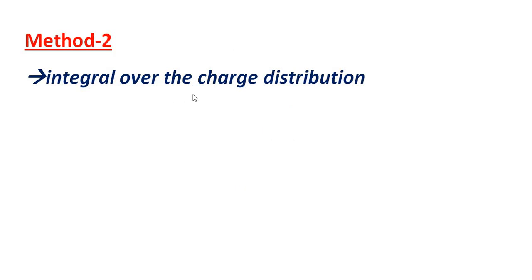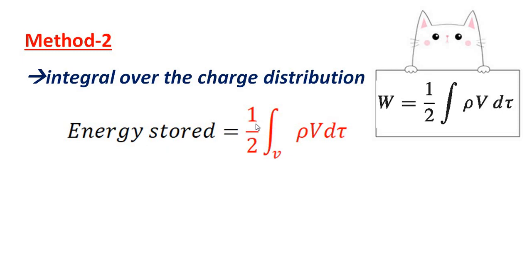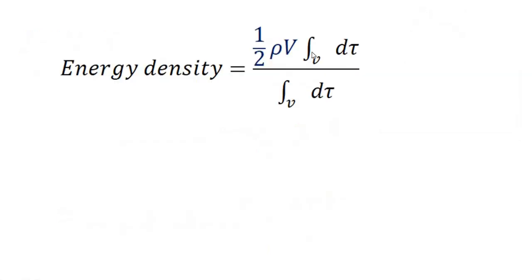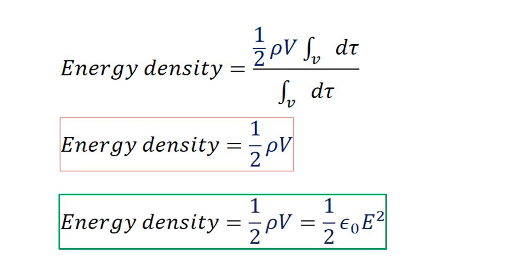Method 2: integral over the charge distribution using volume charge density ρ. Energy stored equals ½ times the integral of ρV dτ. Energy density is the energy stored per unit volume, so dividing gives energy density equal to ½ρV.